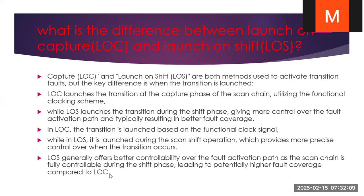In LOC, controllability is less because if you fail to get the desired value at a particular node — since we are using the functional block to launch the signal — you get less coverage. If you are unable to get the proper value at the node, you won't get proper coverage. So this is all about today's lecture and we will meet tomorrow.